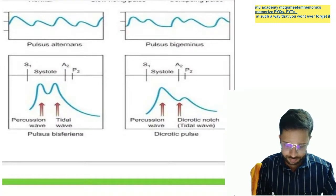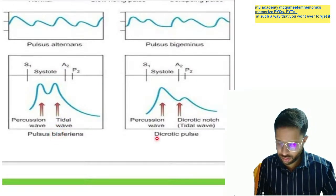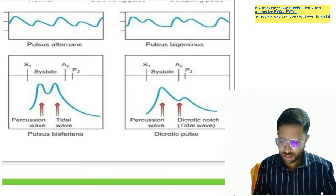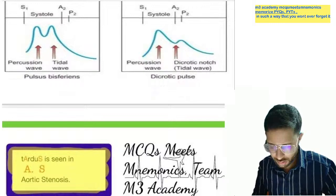In summary from the diagram: bisferiens has both peaks in systole; dicrotic has peaks in both diastole and systole.